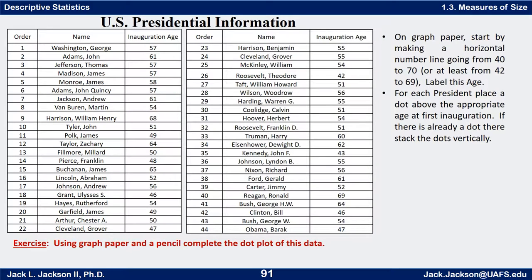I mentioned in a previous video that I had a bunch of information about the US presidents, and here it is — three columns from that larger table. I have the order that the president was first inaugurated and their inauguration age at their first inauguration. Some presidents were inaugurated more than once: several of them once, several of them twice, and in the case of Roosevelt, four times inaugurated.